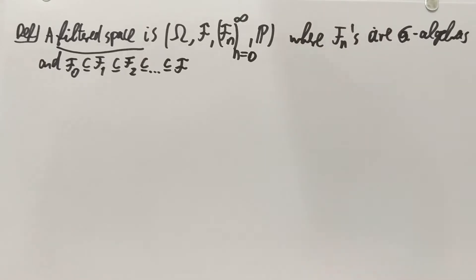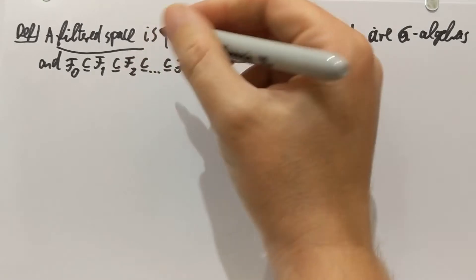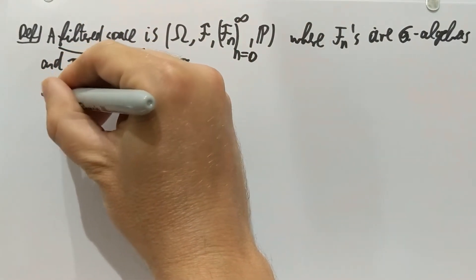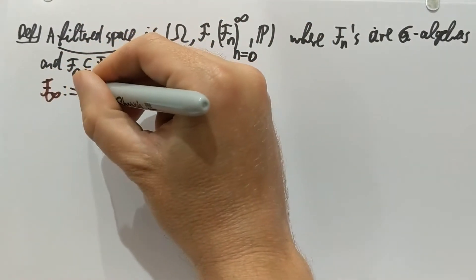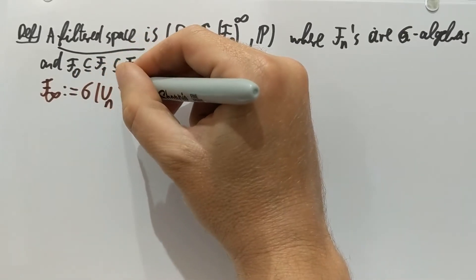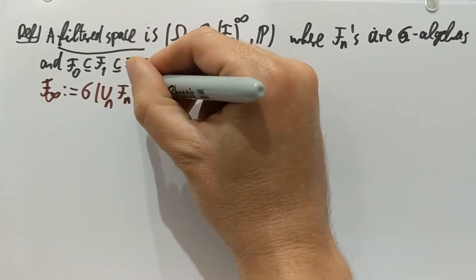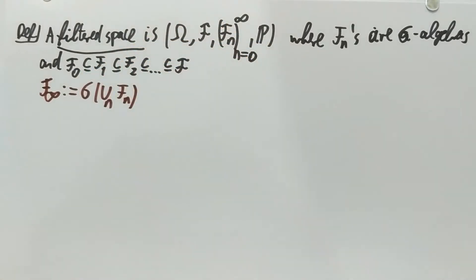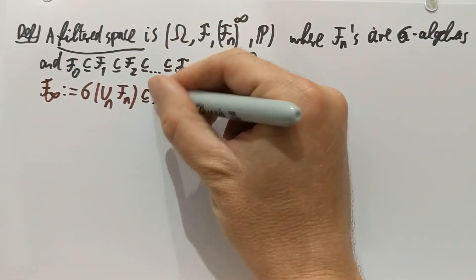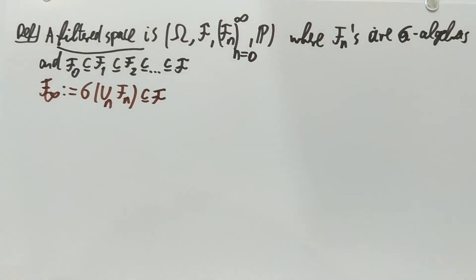Now let's define, in that scenario, F_infinity. In that setup, F_infinity is going to be the sigma algebra generated by each of these — take the union of the finite F_n's, take the sigma algebra generated by that, and that's still a subset of my original sigma algebra F.